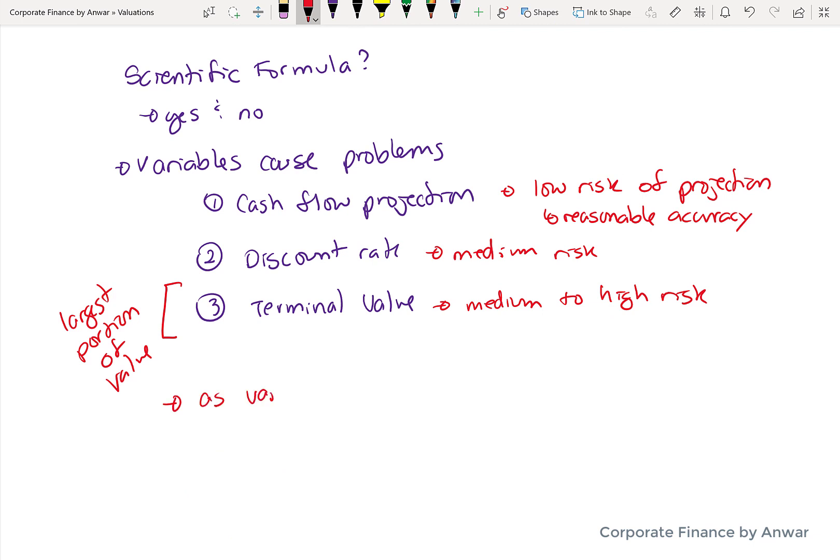So if you make an incorrect calculation or assumption on the terminal value, basically the entire value that you've created or calculated is not going to be very accurate. So as a result, the formula is pretty reasonable, but the level of accuracy of your result depends on the level of accuracy of your variables.